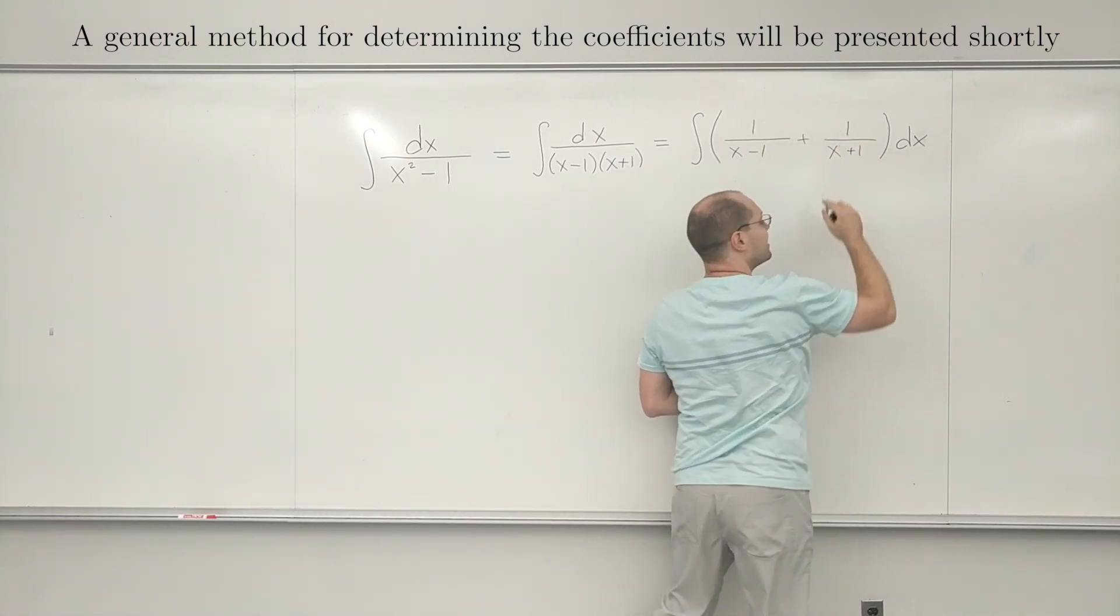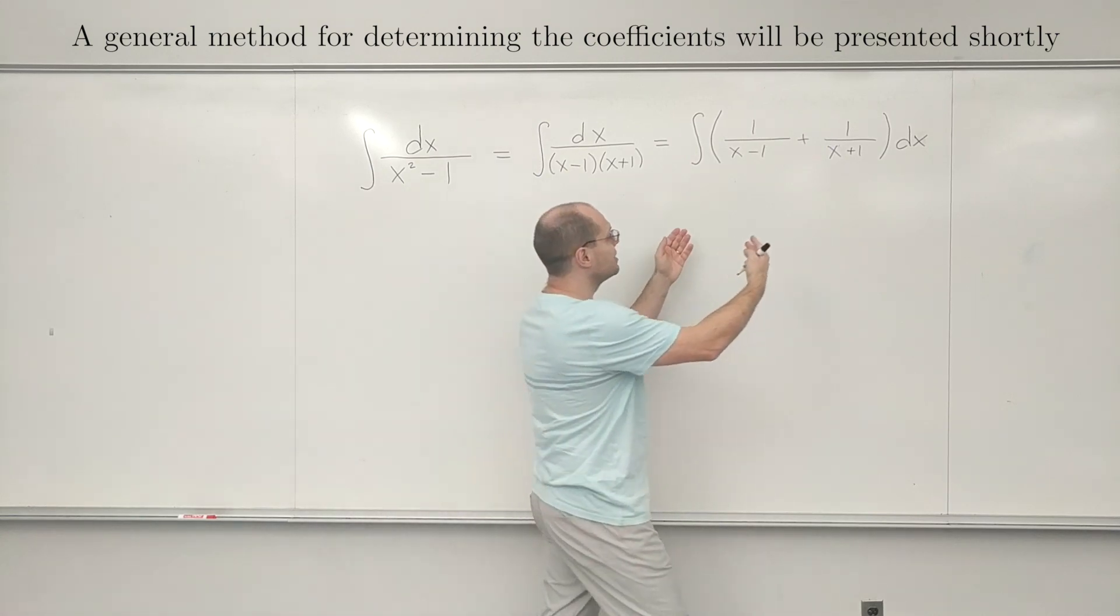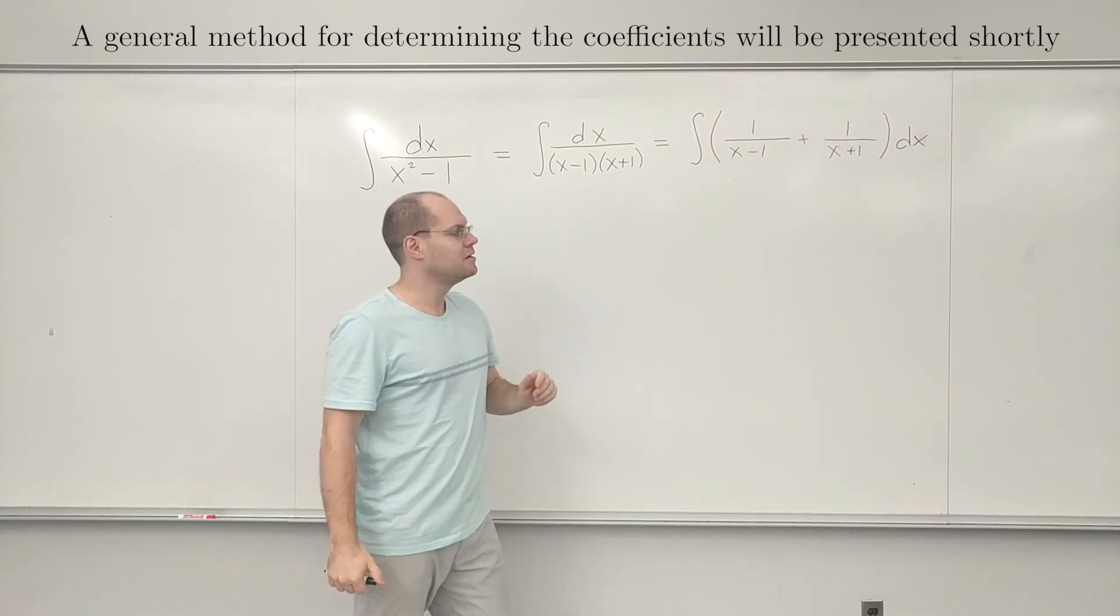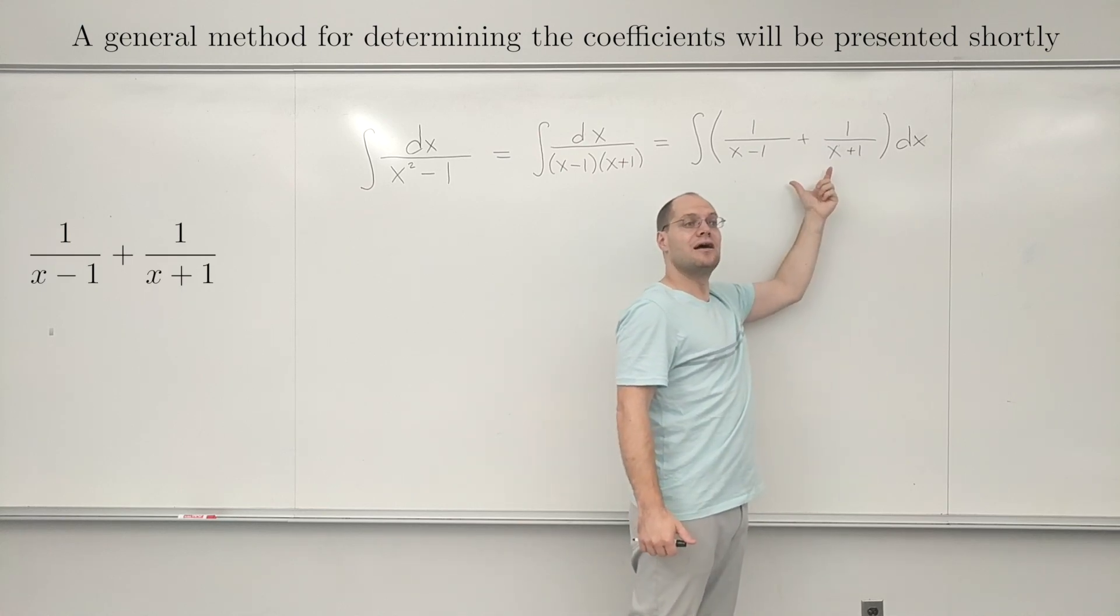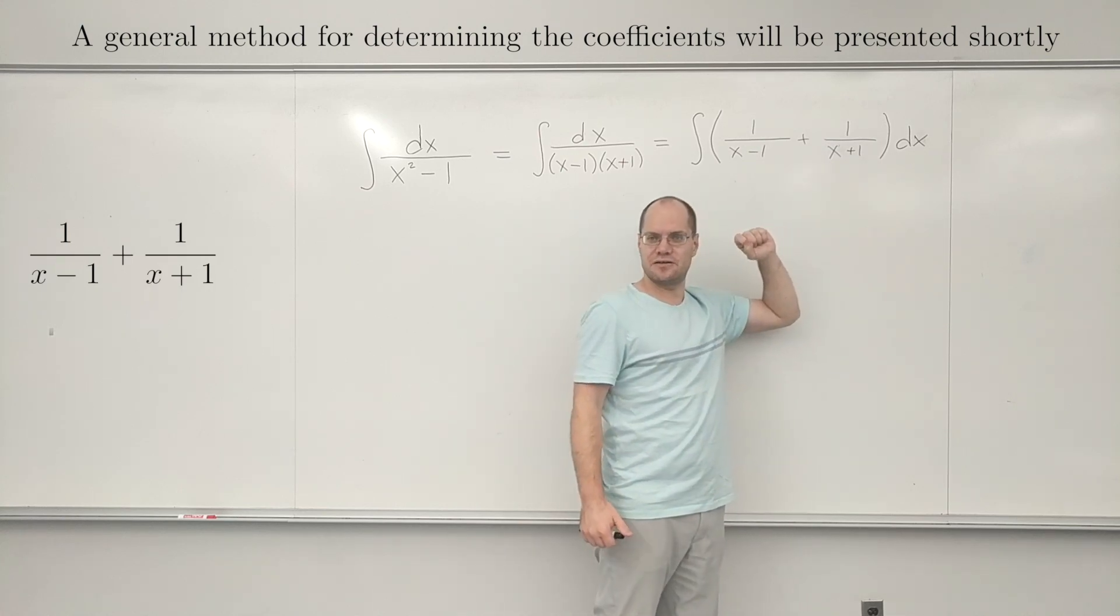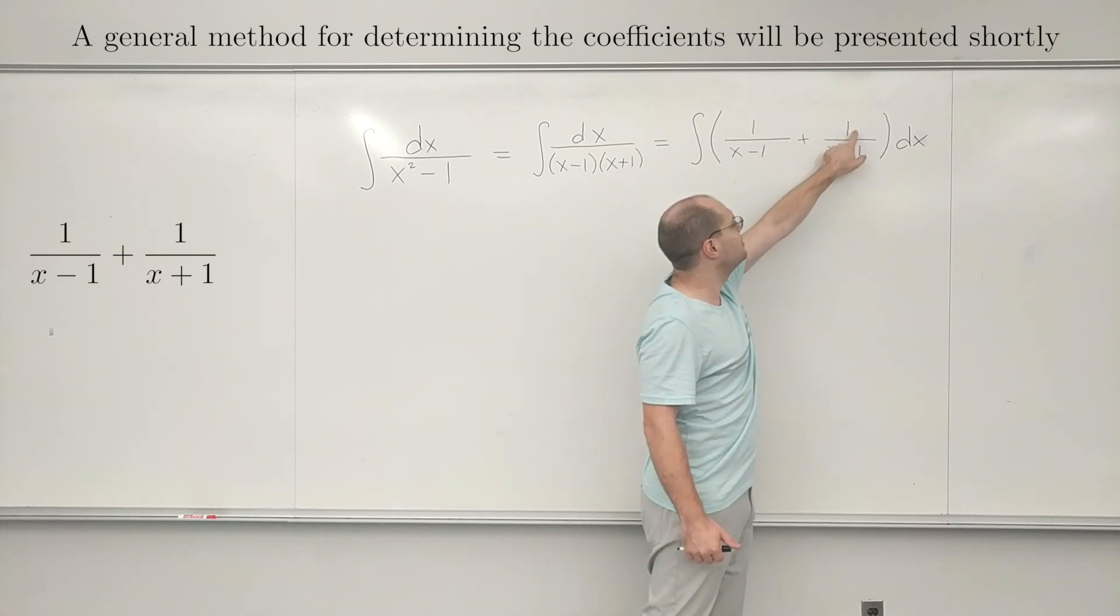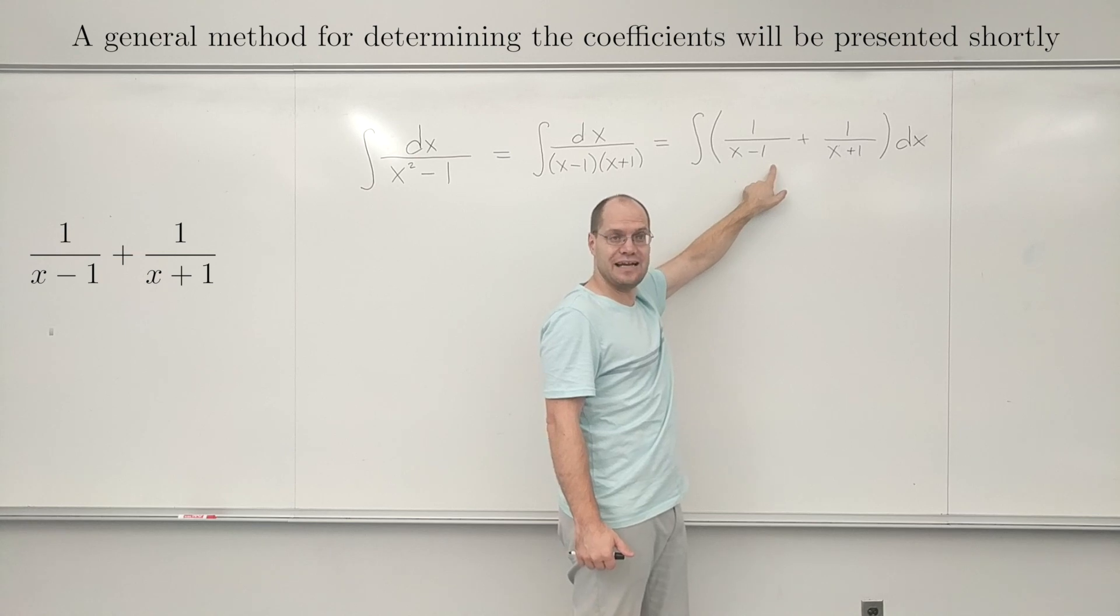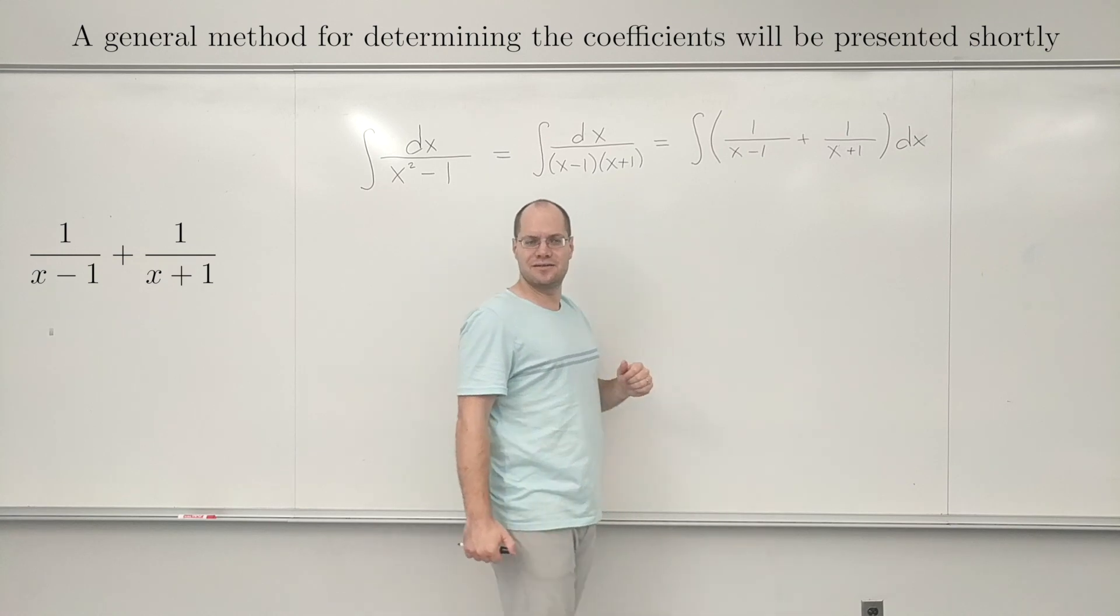So once again, you always have to be better at the forward operation, which is combining these two fractions, than the inverse operation of breaking them apart. But if this was one and one, imagine now adding these two fractions together. You have to multiply this numerator by this denominator, and this numerator by this denominator, right? That's what's involved in adding two fractions.